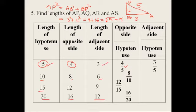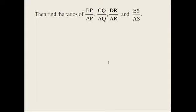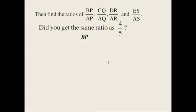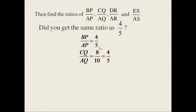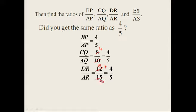Adjacent side by hypotenuse: 3 by 5, then 6 by 10, then 9 by 15, then 12 by 20. Now find the ratios BP by AP, CQ by AQ, DR by AR, and ES by AS. Did you get the same ratios as 4 by 5? Yes, absolutely we are getting the same ratios. 8 by 10, when we cancel by 2: 2 fours are 8 and 2 fives are 10, so 4 by 5. DR is 12, AR is 15: 3 fours are 12, 3 fives are 15, so again 4 by 5. Similarly 16 by 20 is also 4 by 5.